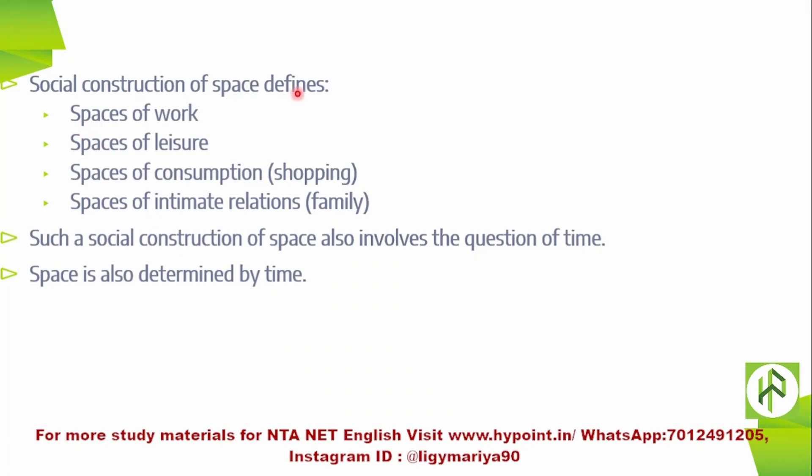The social construction of space defines spaces of work, spaces of leisure, spaces of consumption like shopping, and spaces of intimate relations such as family. The character of social relations among people constructs the space. A building in a particular place becomes a certain kind of space based on what social relations are happening there — whether it is a space of work, leisure, consumption, or intimate relation.